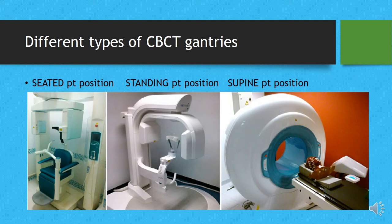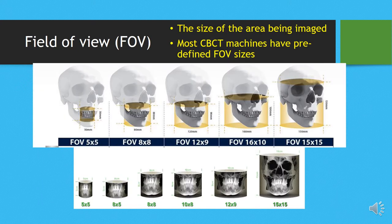CBCT is now used not just in dentistry but also in orthopedics, ENT, and other medical sciences. Based on the area being covered, the machine is arranged differently: there is a seated position, a standing position, and a supine position — similar to CT where the patient lies down. In dentistry, we generally use the standing position, which is similar in setup to how we use an OPG machine.